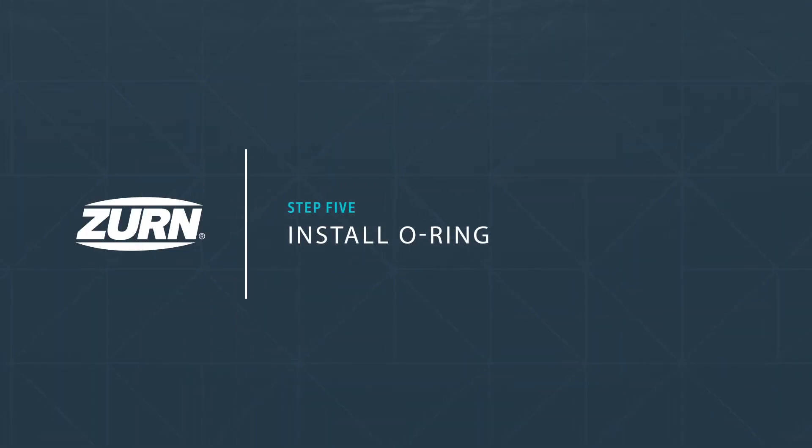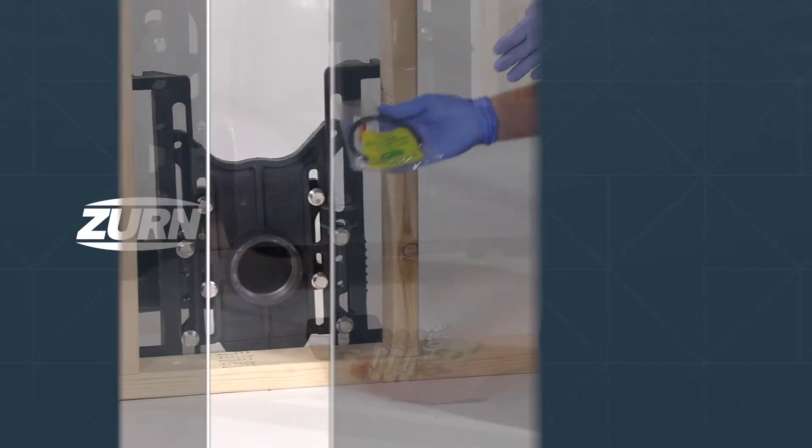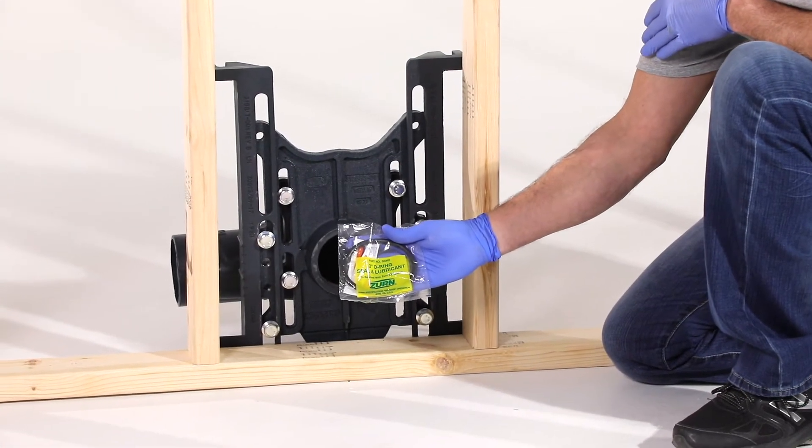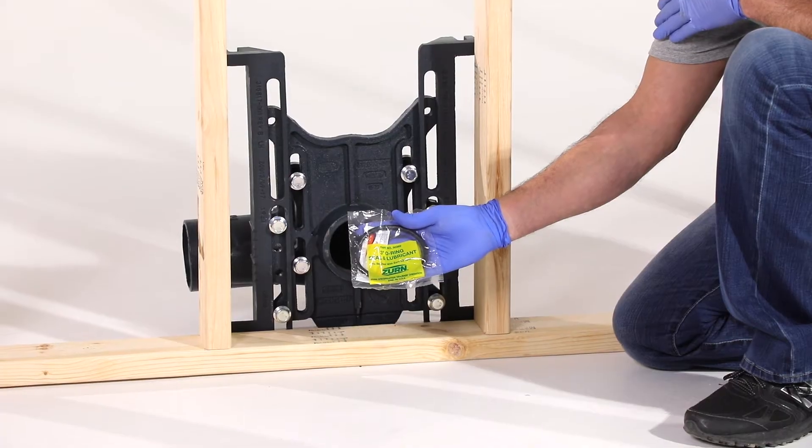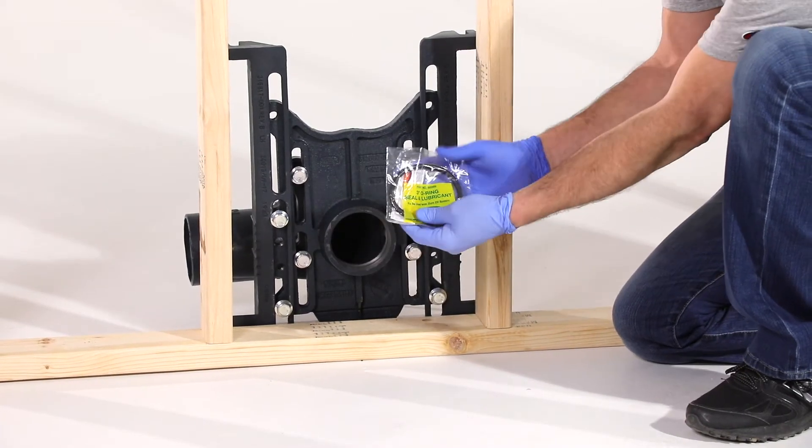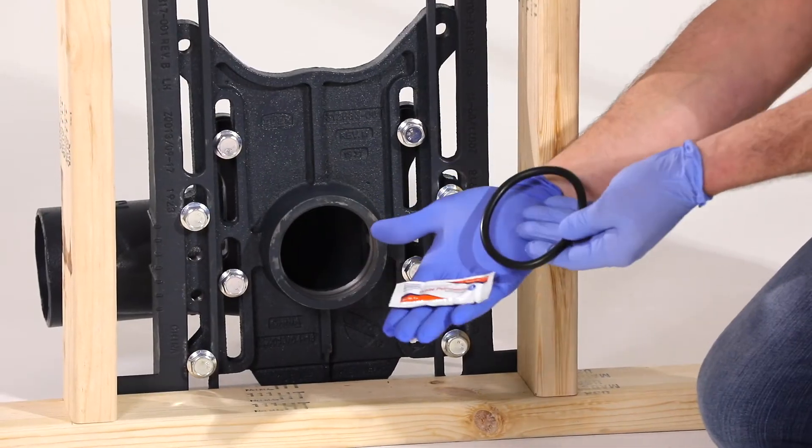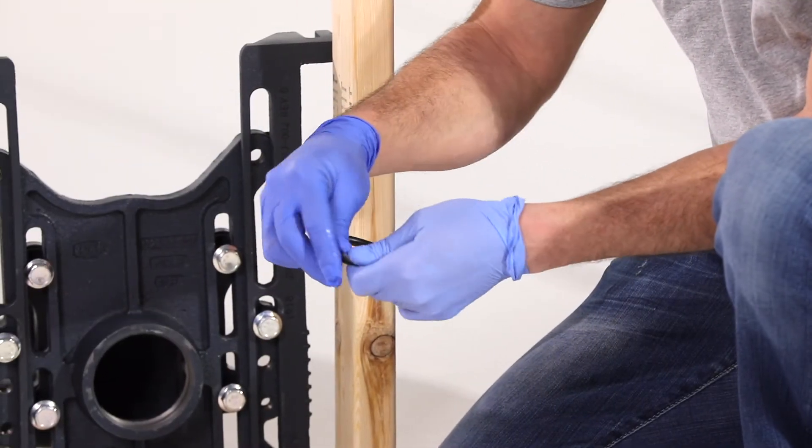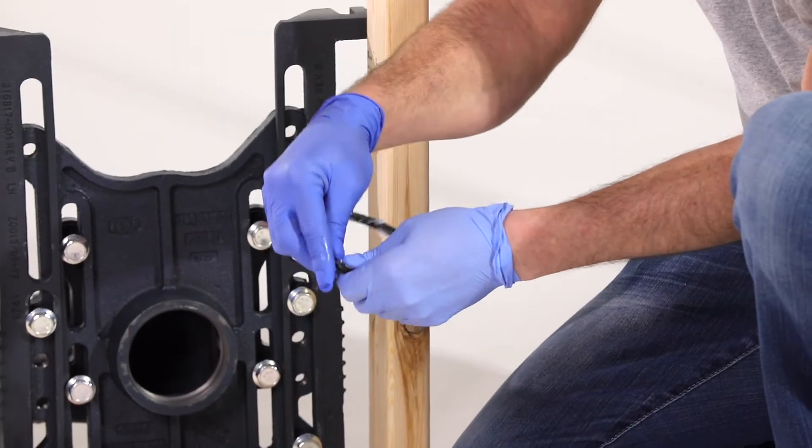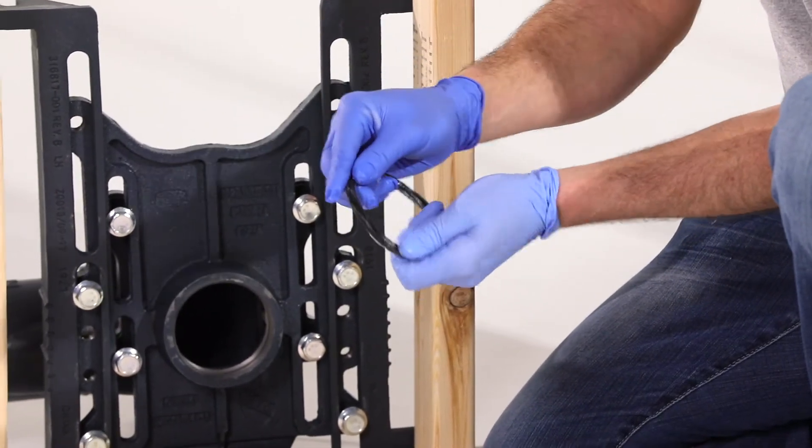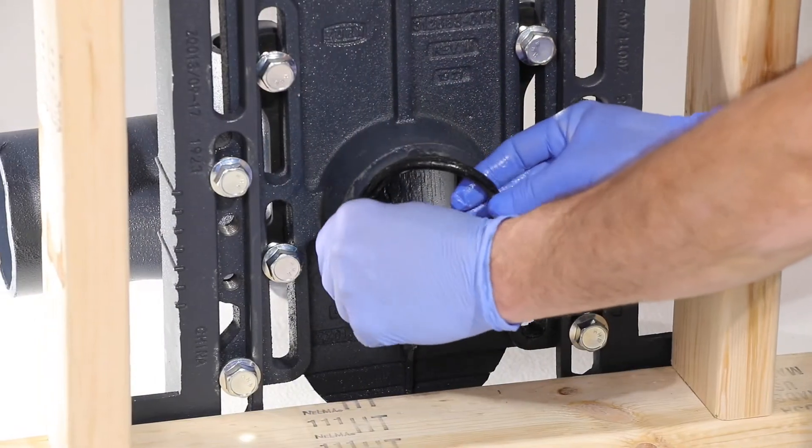Step five: installing the O-ring. This is a critical step - don't let your O-ring become an 'oh no.' Improper installation can result in leakage behind the wall. Find your O-ring and lubricant bag. Lubricate the O-ring and coupling, then once lubed, insert the O-ring into the groove.